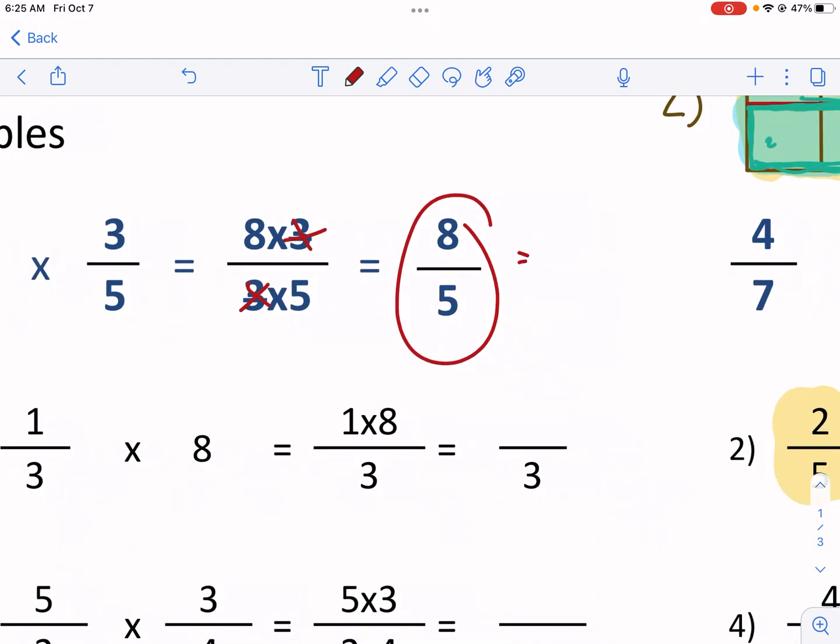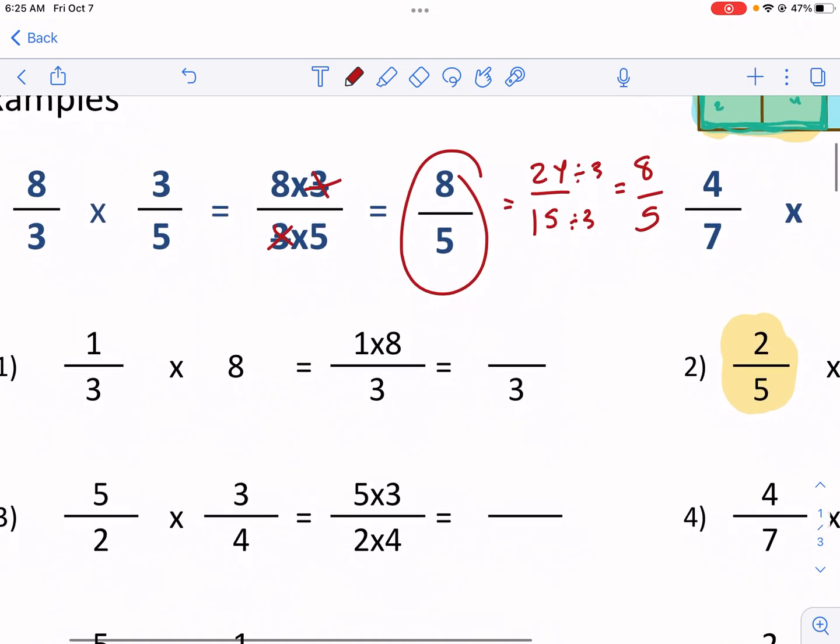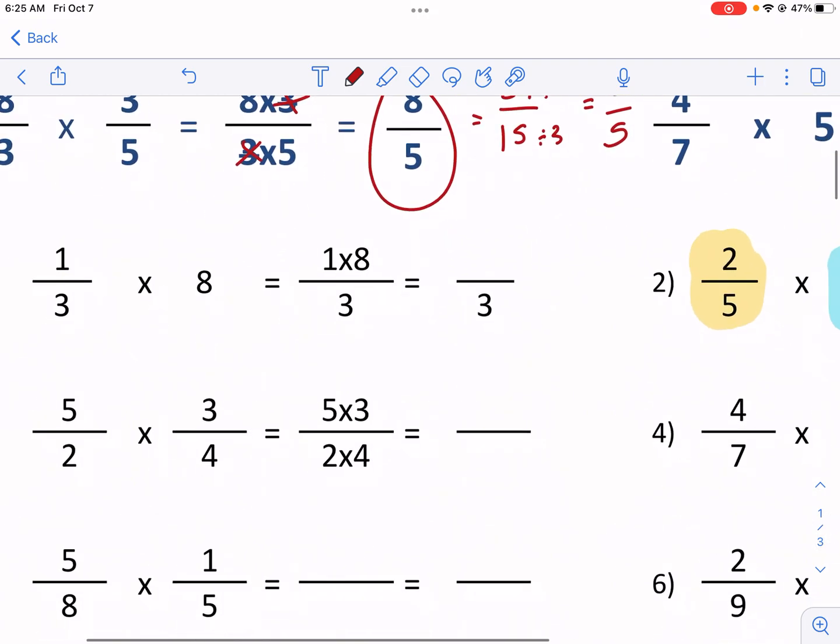Why does that work? Again, if we do eight times three, that's 24, and then three times five, that's 15. They have a common factor of three. So what you're doing is you're essentially getting rid of that three. You're dividing both the top and bottom by three, you're getting rid of it, and you're left with eight fifths. That's how you reduce.